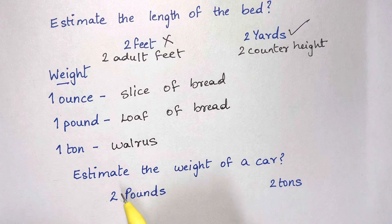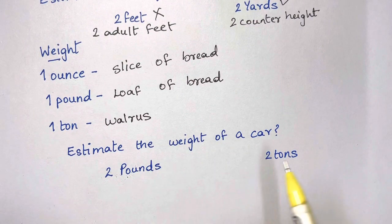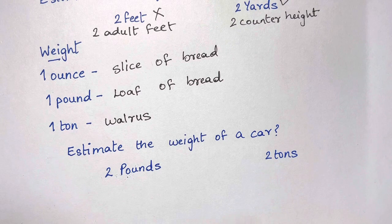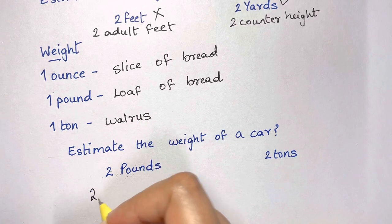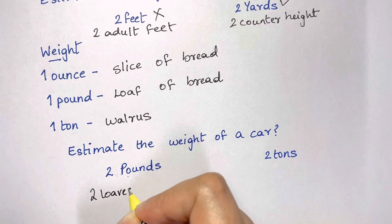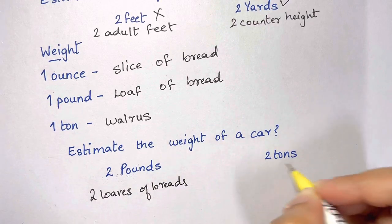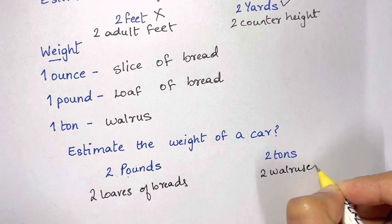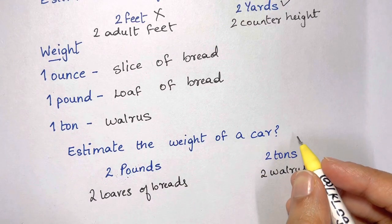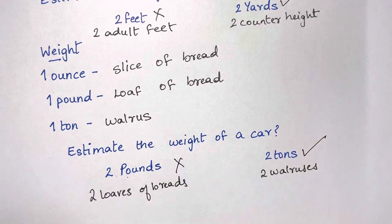Let's estimate the weight of a car — is it two pounds or two tons? Two pounds is like two loaves of bread, and two tons is two walruses. Of course a car doesn't weigh two loaves of bread, so the better estimate is two tons.